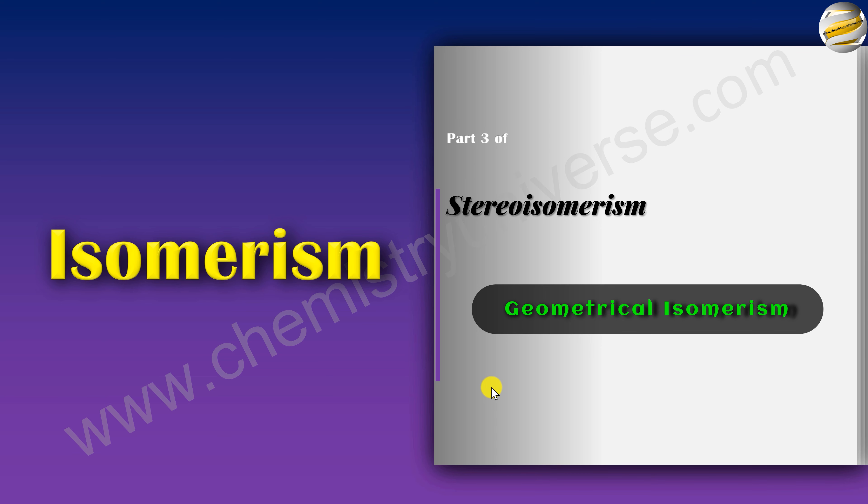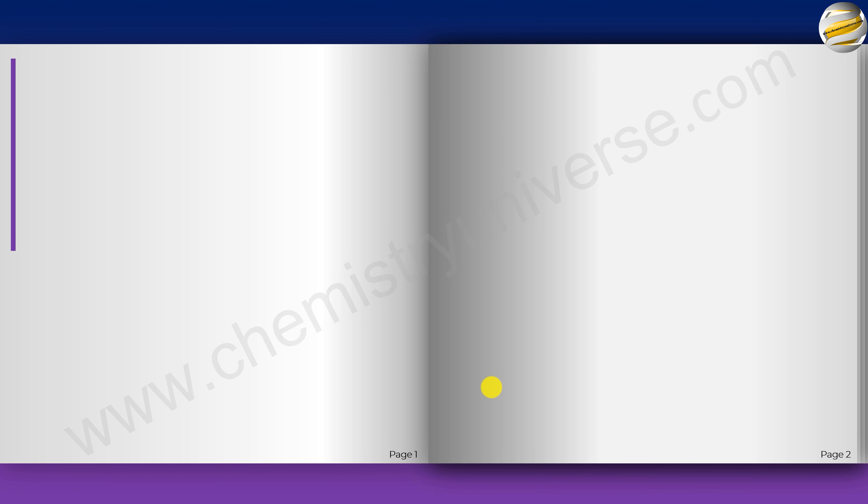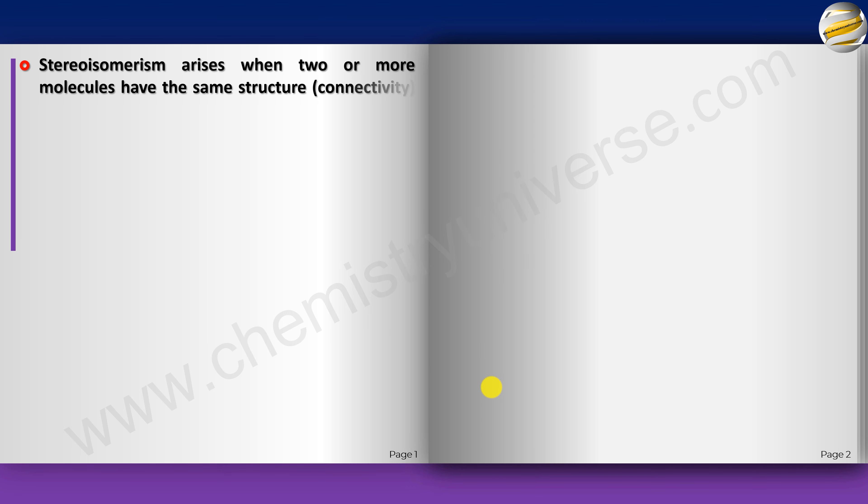This video is dedicated to geometrical isomers. This is Part 3, and there will be a Part 3B covering unique kinds of geometrical isomers for higher level exams like Olympiads. Starting with geometrical isomers: stereoisomerism arises when two or more molecules have the same structure — that is, the same connectivity — but different arrangements of atoms in space.